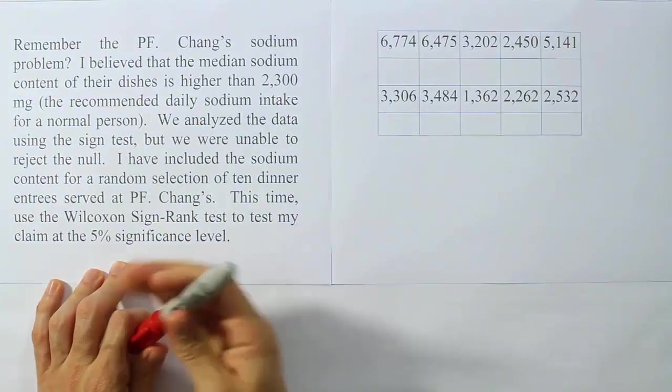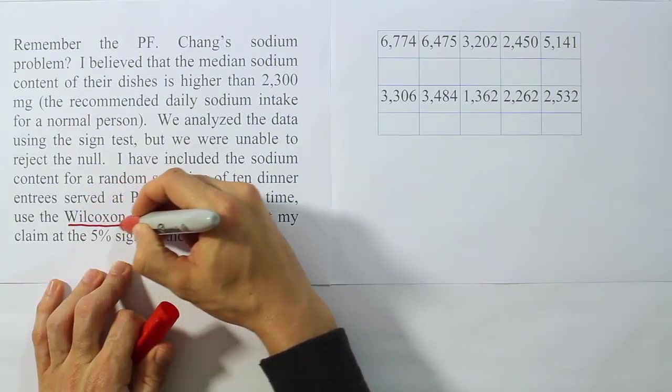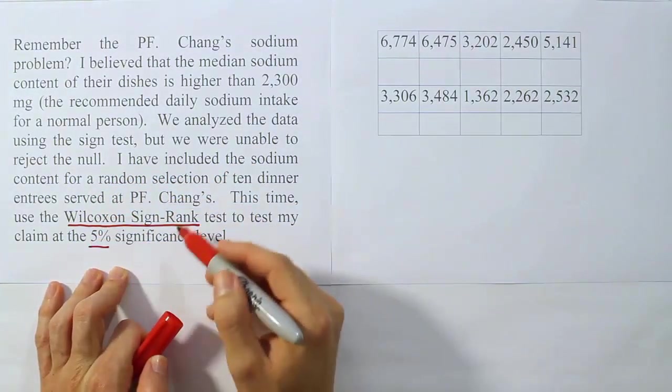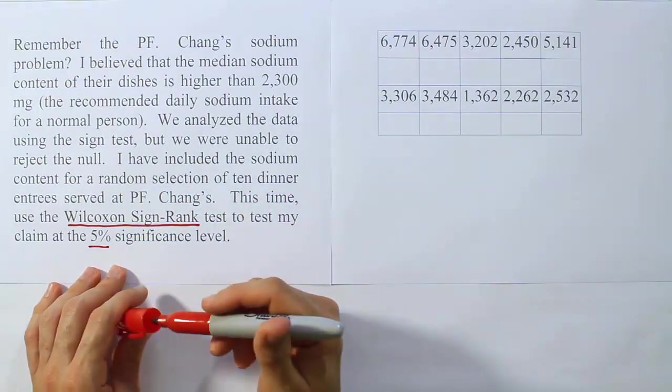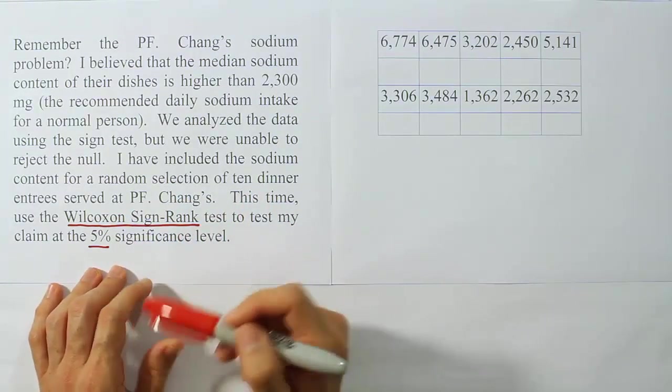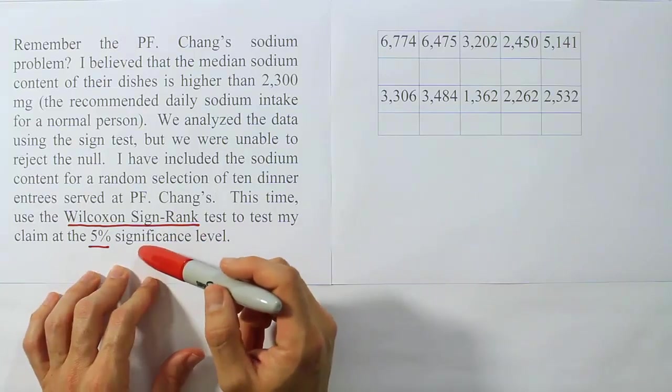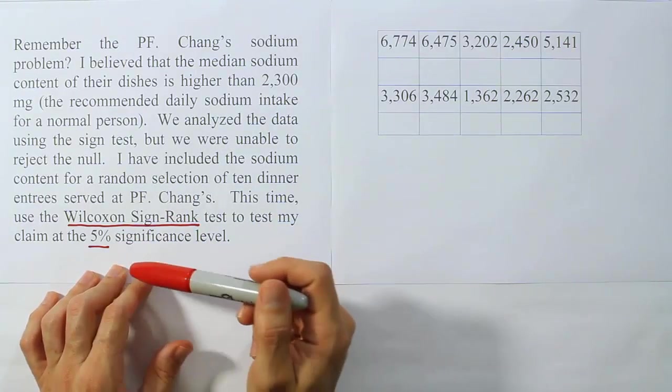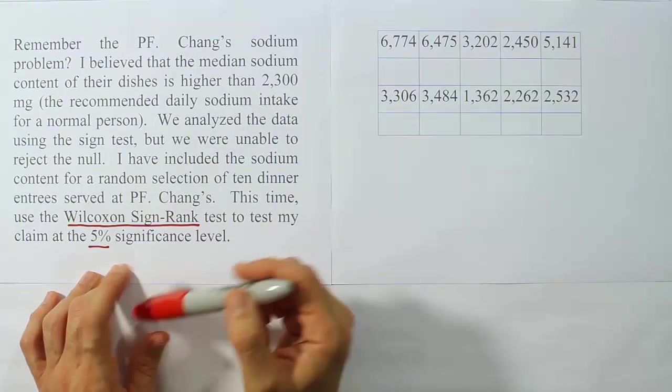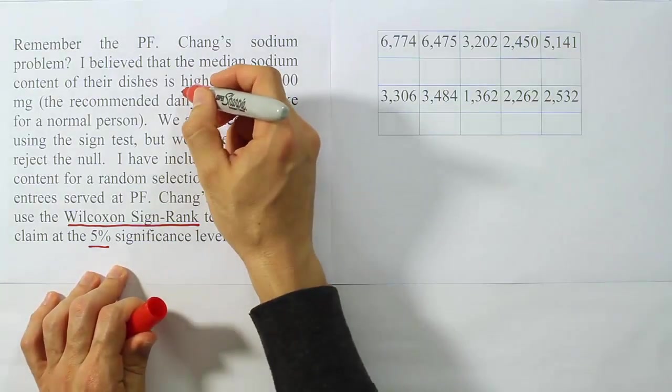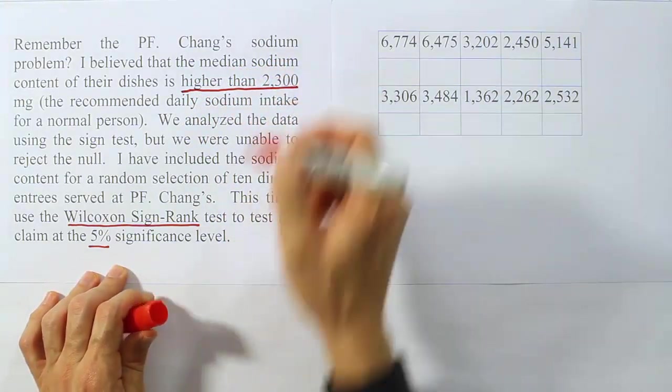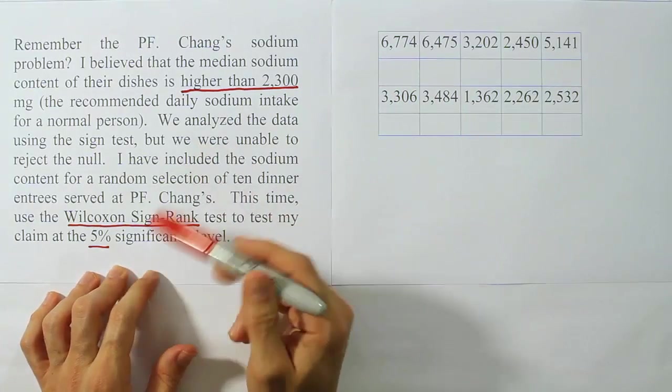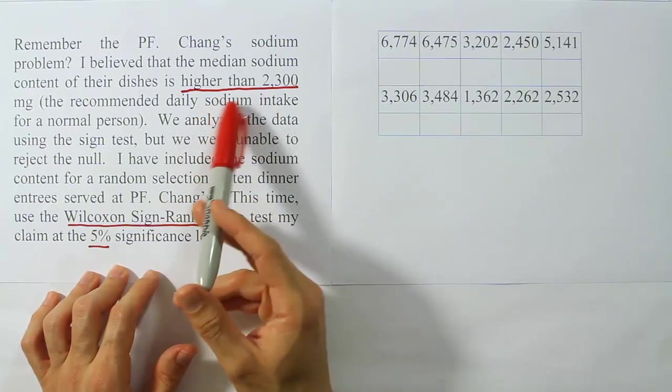So we're going to use this test, the Wilcoxon signed-rank test, in a slightly different way than we've done it before, but we're still going to use it to test the hypothesis. The procedure has the same overall layout. The only difference is we don't really have a before and after to do our subtraction with. What we're going to do instead is subtract that provided median.